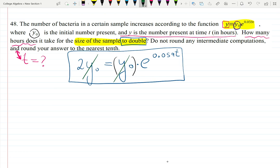We can divide by y sub zero because it's not zero, right? We did not start with zero bacteria—how can they multiply? There's no bacteria. And we can, when we divide by y sub zero, the equation becomes 2 equals e raised to the 0.059t.